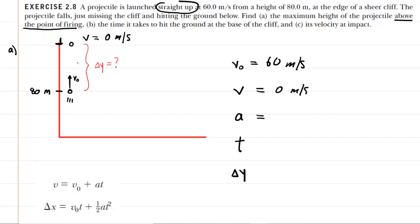Now, for any object that's flying through the air here on Earth, the acceleration is negative 9.8 meters per second squared. We don't know the time. And then we're trying to figure out this change in vertical position, a.k.a. the vertical displacement.